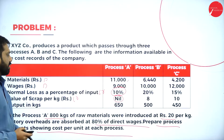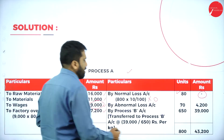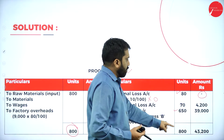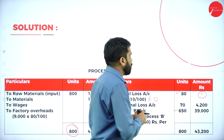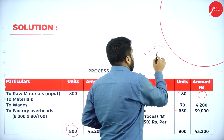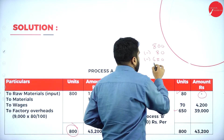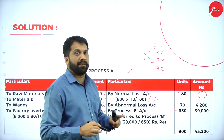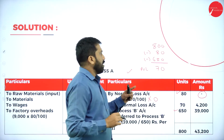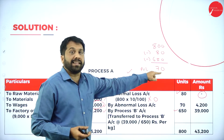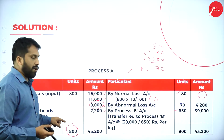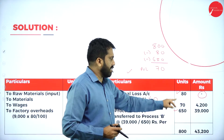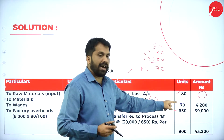Working: 800 − 80 − 650 = 70. Since the answer is positive (70), this is abnormal loss of 70 units. If the answer were negative, it would be abnormal gain. So we have abnormal loss of 70 units in Process A.